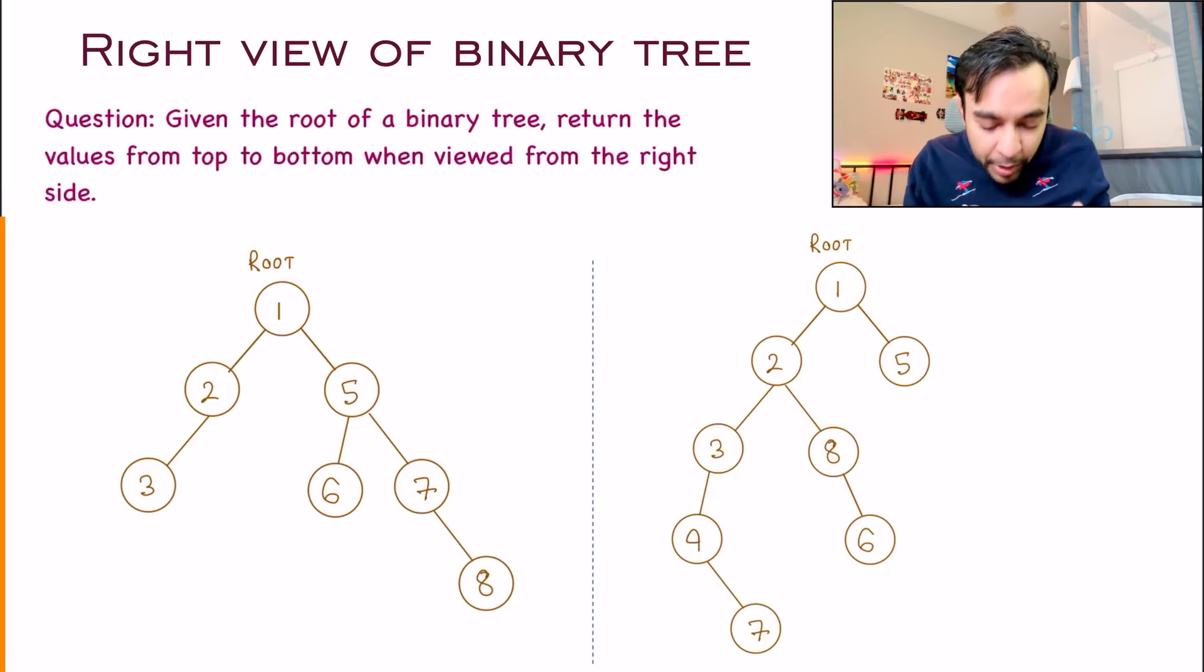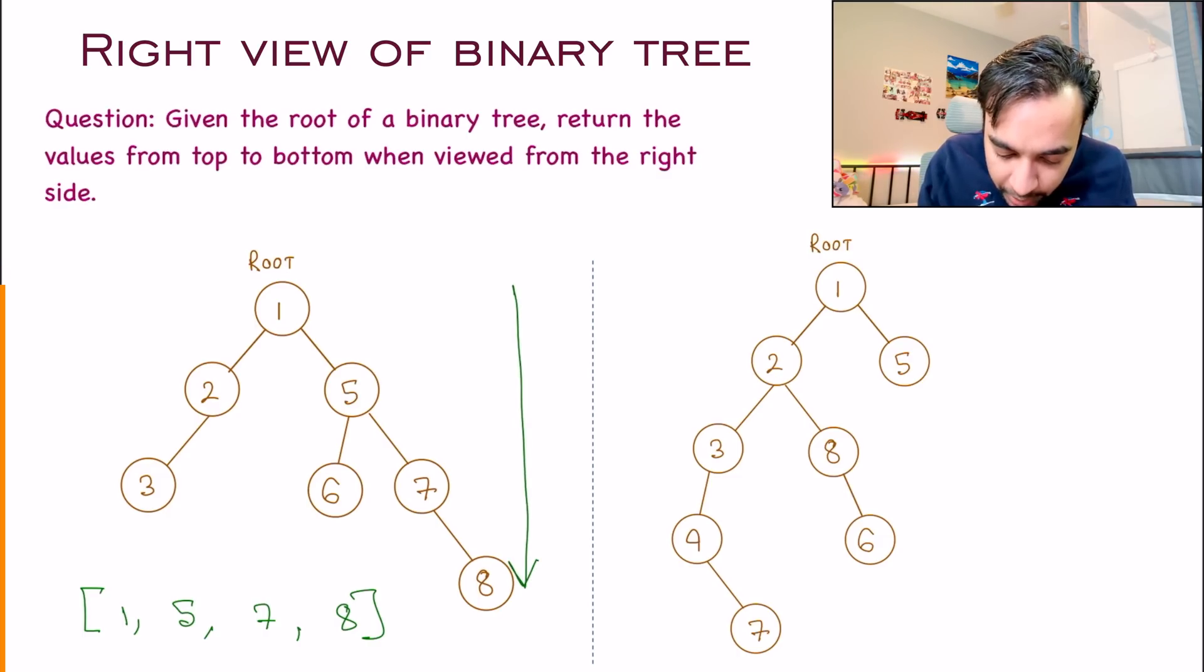So for this particular test case, you need to return 1, 5, 7 and then an 8 because going top to bottom, these are all the right most nodes, correct?